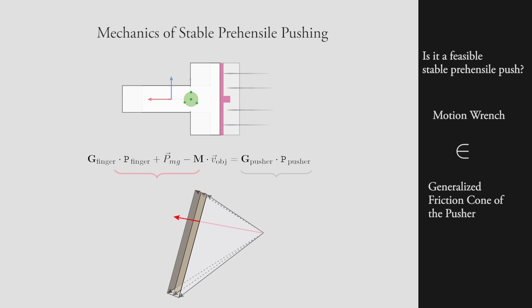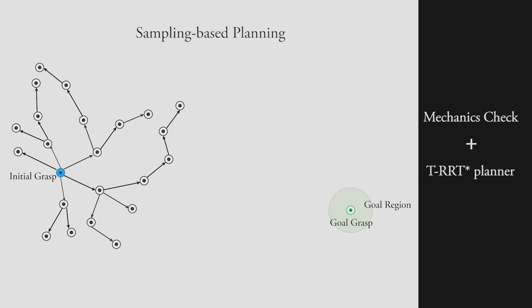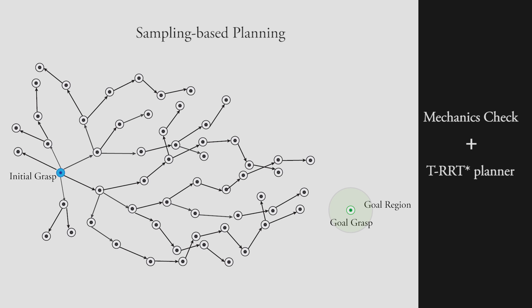For planning in-hand manipulations, we combine the mechanics evaluation with a sampling-based planner. The planner explores the configuration space of different grasps and generates a tree of grasps connected with stable prehensile pushes. A path in this tree is a pushing strategy to force the object to a desired pose in the grasp.